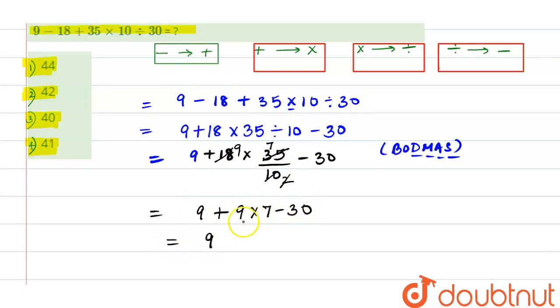After dividing, multiplication has to be done. So 9 plus 9 times 7 is 9 plus 63 minus 30.